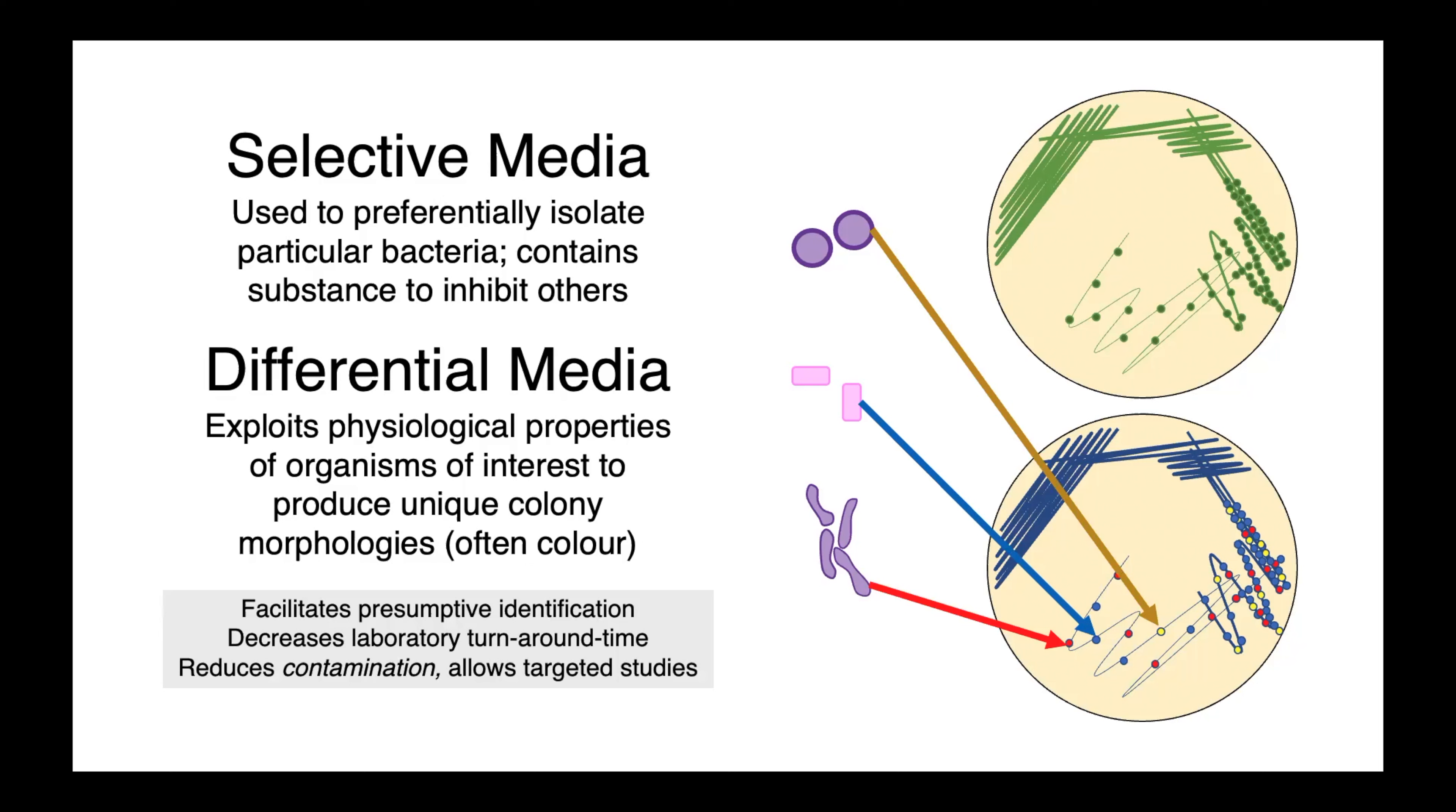This presumptive identification decreases laboratory turnaround time in order to ID our bacteria, which is a critical step in any diagnostic or research application. Finally, selective and differential media are really useful for reducing contamination. So particularly in a research context, it allows targeted studies. It allows us to isolate only the bacteria we're interested in from our research samples.